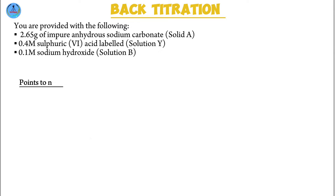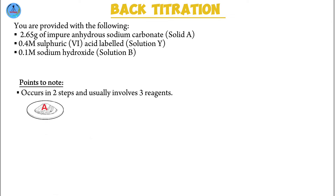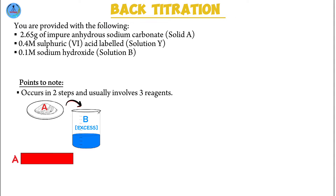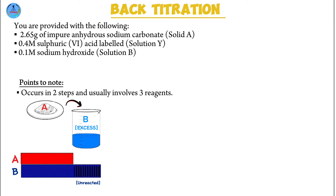In the case of back titration, you're always going to have two steps — two different chemical reactions. You're going to have the first one followed by the second one. In most cases, you're provided with three reagents: reagent A, B, and C. In the first step, you're going to react reagent A, which can also be a solid, with an excess solution of B — emphasis on excess. A is going to be completely reacted, that is, all of it is used up. But because we used an excess volume of B, some will be left unreacted. You'll have a specific volume of B left unreacted at the end of step one.